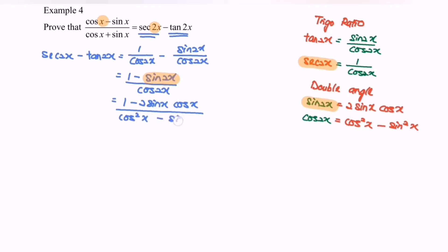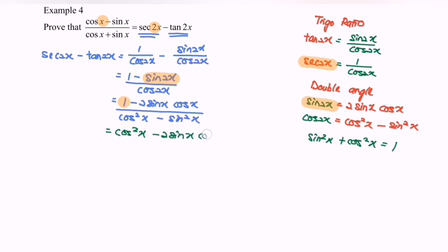Now we focus on the 1 in the numerator. Based on the Pythagorean identity, sin²x + cos²x = 1. Substituting, the numerator becomes cos²x - 2 sin x cos x + sin²x, and the denominator is cos²x - sin²x.